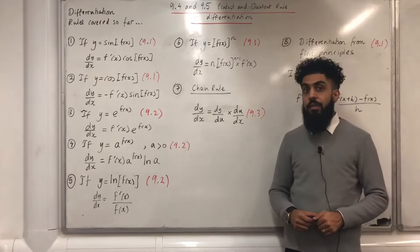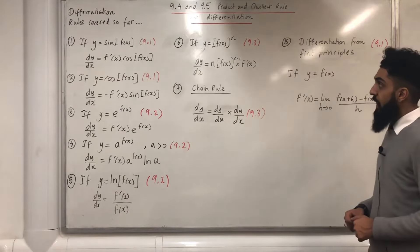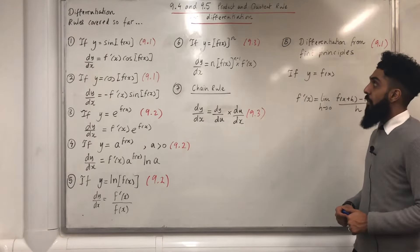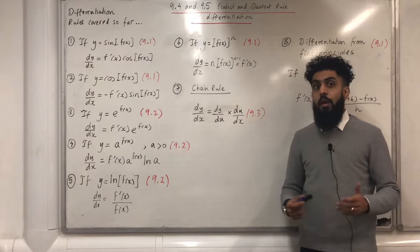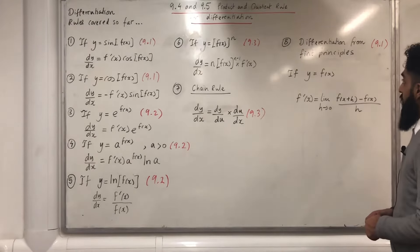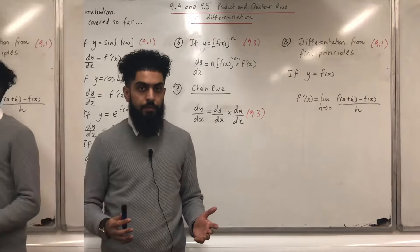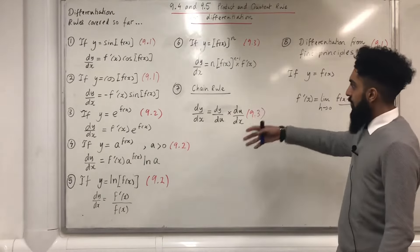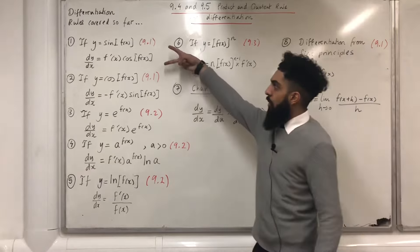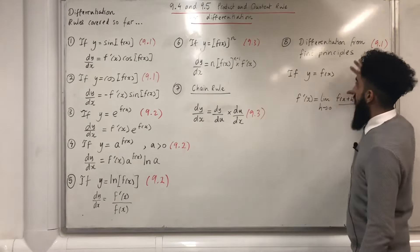Rule number 5: differentiating the natural logarithm, covered in video 9.2. Rule number 6: differentiating f(x) to the power n, covered in video 9.3. Rule number 7: the chain rule, covered in video 9.3. Rule number 8: differentiation from first principles, covered in video 9.1. If you find any of these rules tricky, I would advise you to watch the required video clip: 9.1, 9.2, or 9.3.